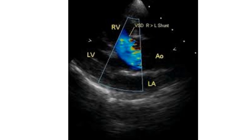Blood from the right ventricle preferentially enters the aorta, which is overriding the ventricular septal defect, because the right ventricular outflow tract is narrowed in Tetralogy of Fallot as a result of infundibular pulmonary stenosis.